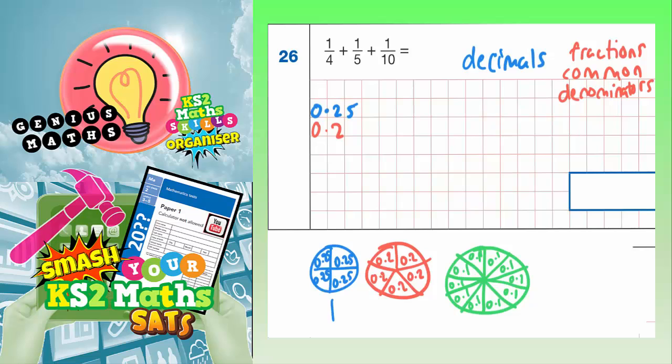So, a quarter is 0.25, a fifth is 0.2, and a tenth is 0.1. So all you'd have to do then is add them together. Now, don't forget that when we're adding decimals together, we've got our decimal points lined up. But we have empty gaps here, so we could just fill those in with 0s. And now we're ready to add them up.